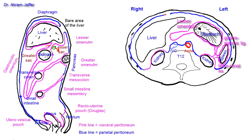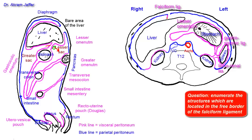Returning to the same starting point, the peritoneum is reflected as a double fold — I'll draw one of the leaves of this double fold. This is the falciform ligament: one leaf extending from the diaphragm and anterior abdominal wall to the liver, and the peritoneum encloses the liver.